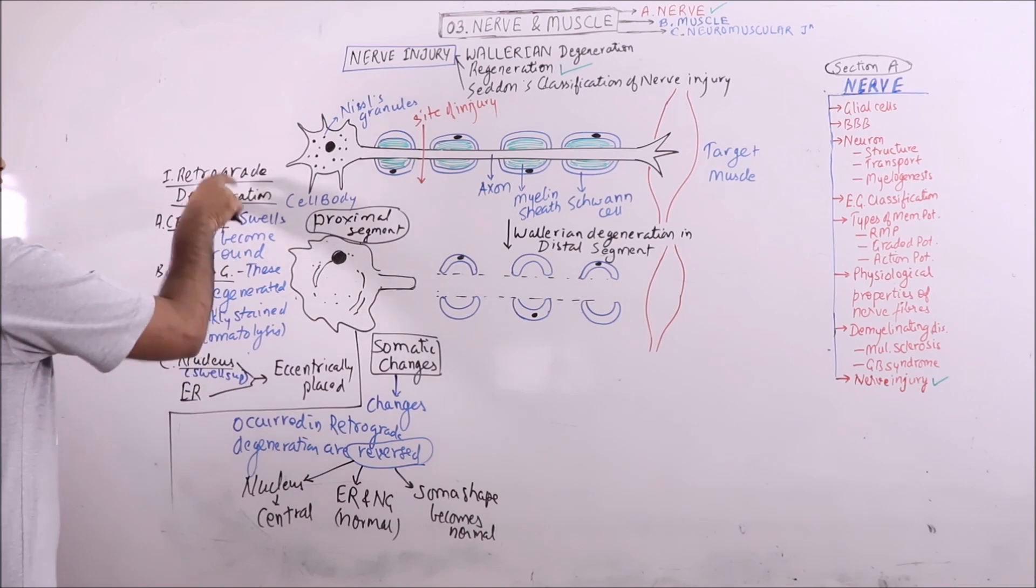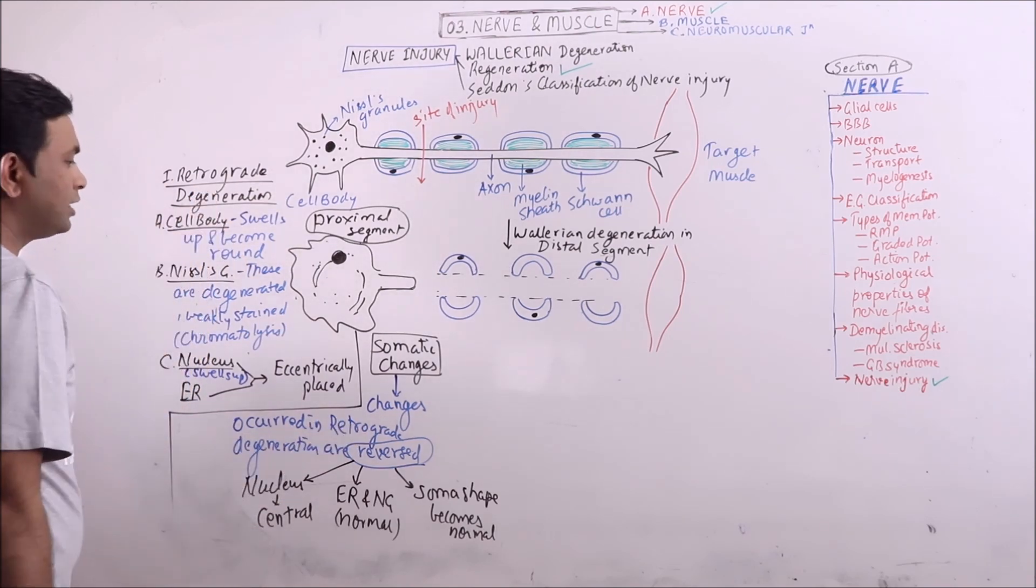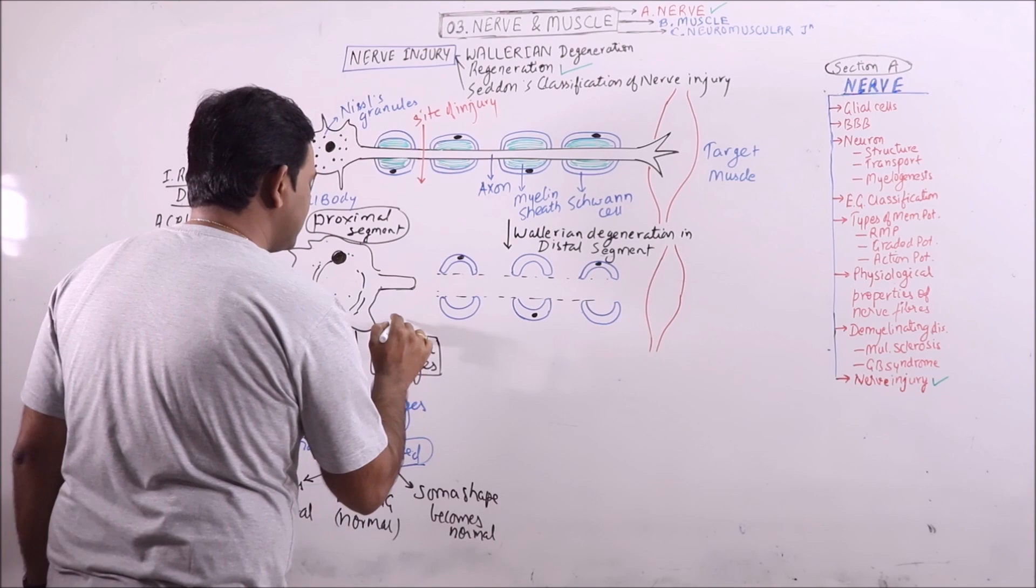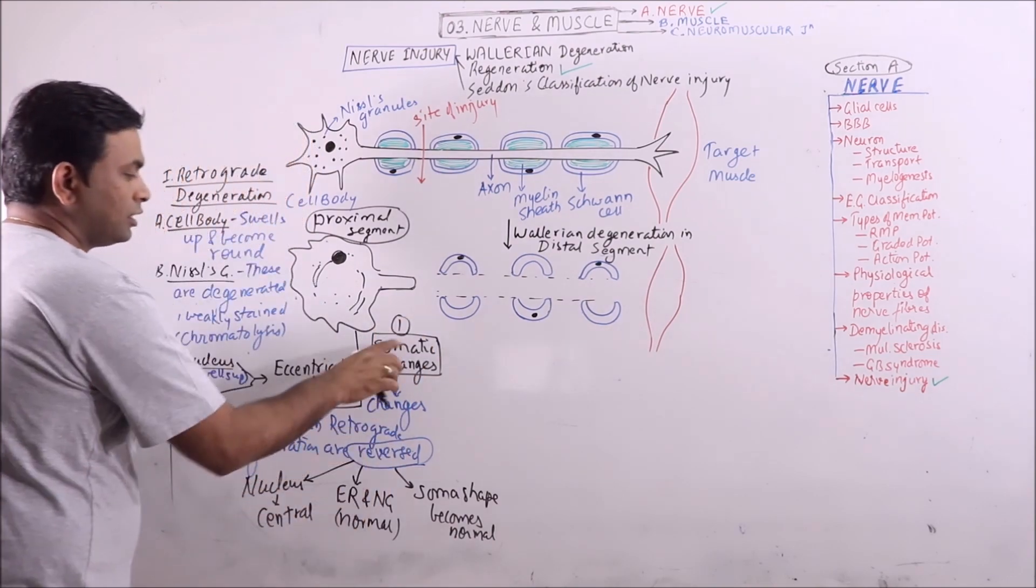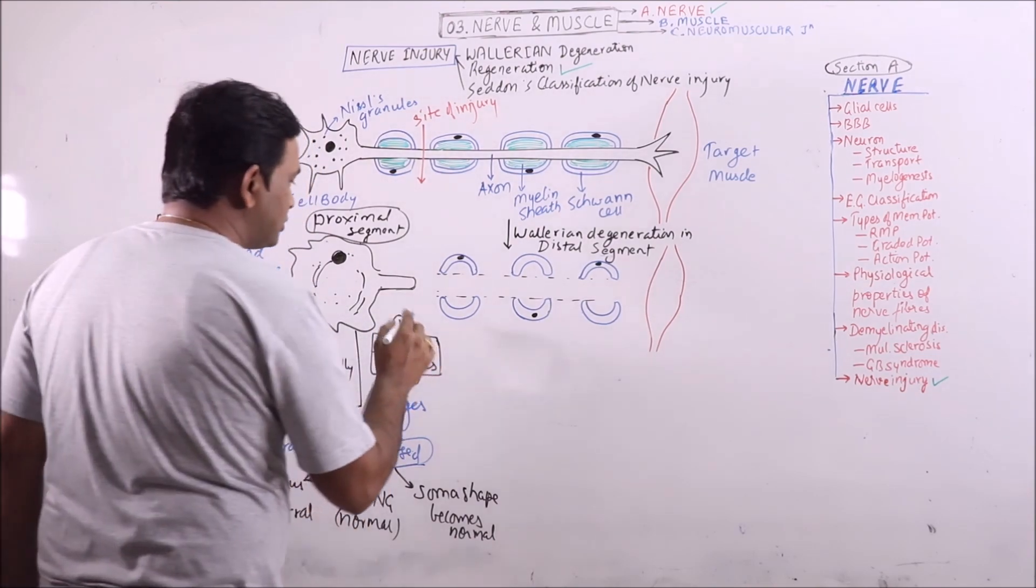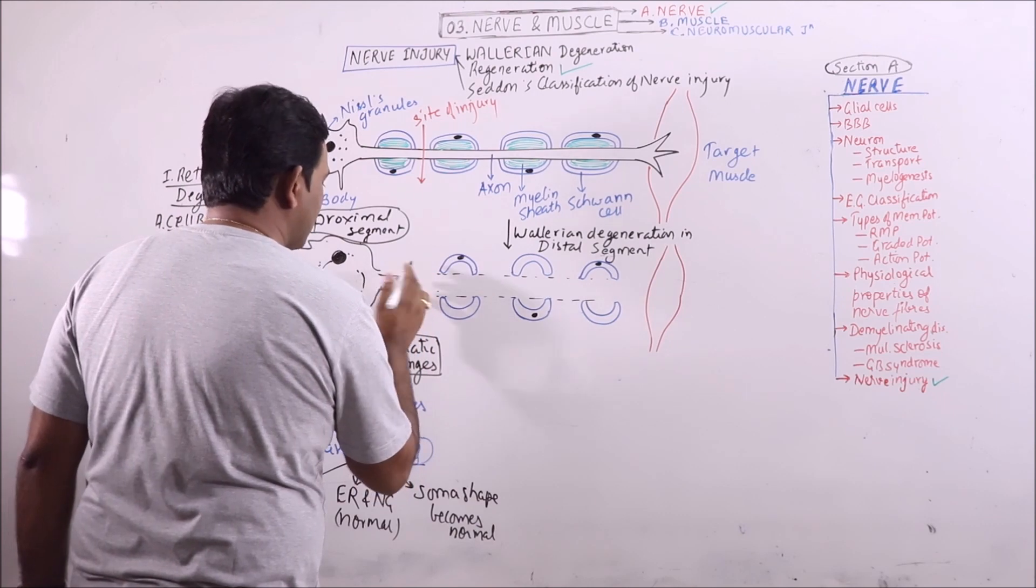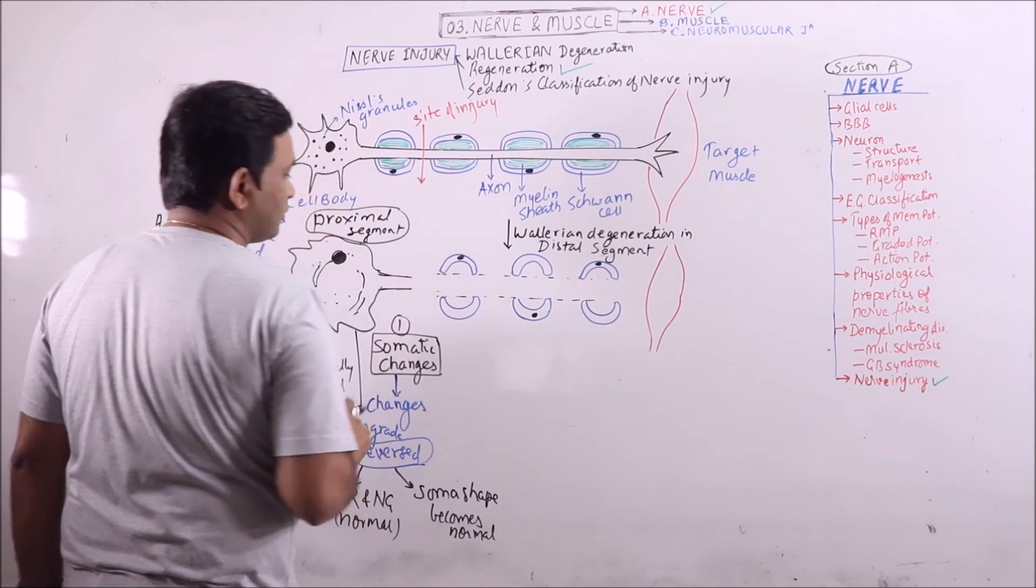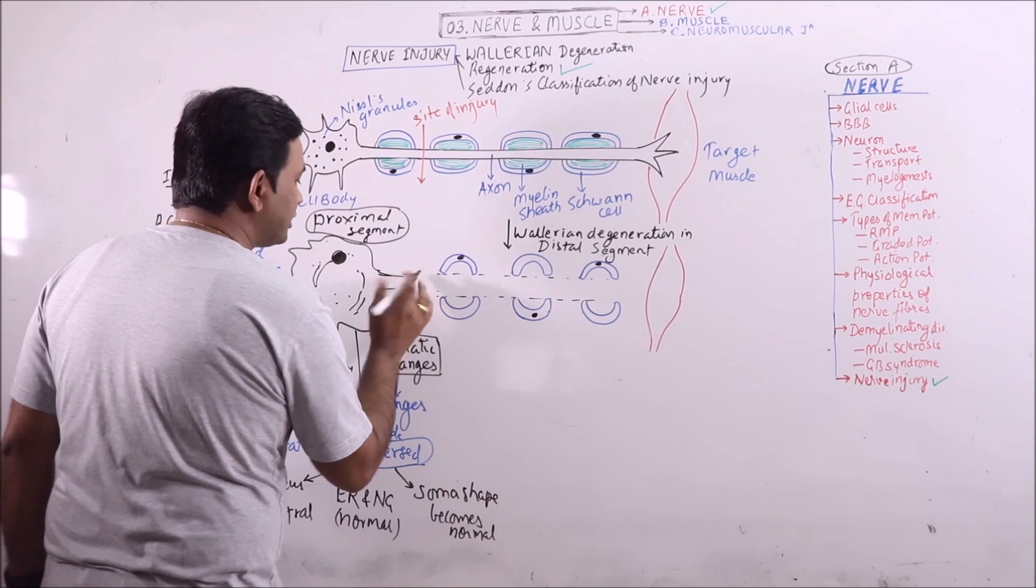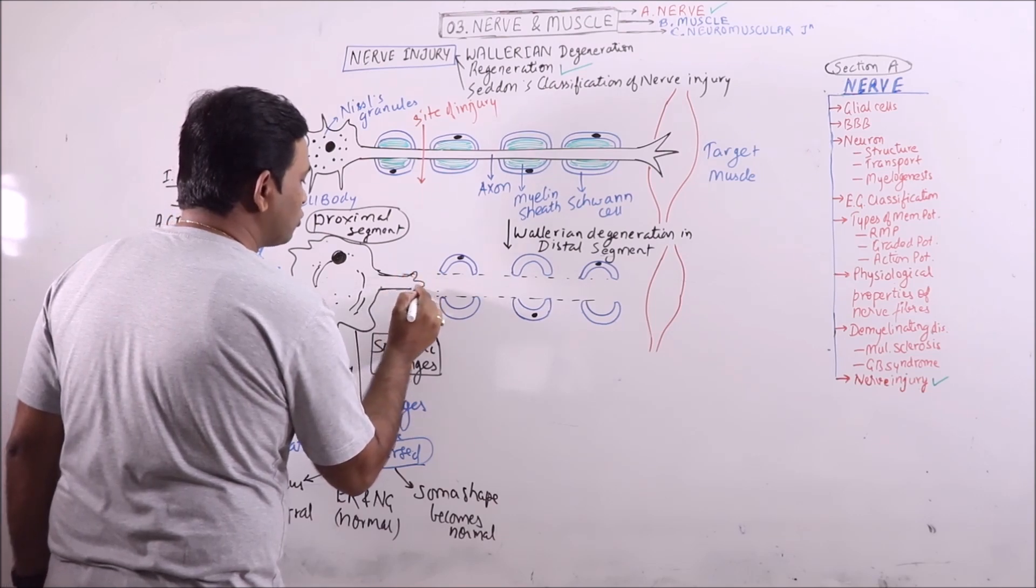So the changes that have occurred during retrograde degeneration are basically reversed. So first change during regeneration is somatic changes. Second change is that in the axonal stump proximal to the site of injury that shows sprouting.